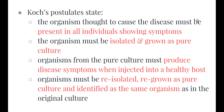Second, the organism must be able to be isolated from the individual and grown as a pure culture on a petri dish in the lab. Third, organisms from the pure culture must produce disease symptoms when injected into a healthy host. So if you take blood from one of the 57 anthrax patients, culture the bacteria in a petri dish, then inject those bacteria into a healthy person, that person will show exactly the same symptoms as the original anthrax patients.